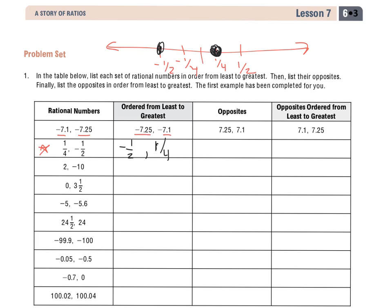If I look at the opposites of those, and I'll do this in a different color. Let's first look at the negative half. If this is 0, it's 1, 2 jumps away. So the opposite means same distance away on the opposite side of 0. So 1, 2, it's going to be a positive half.